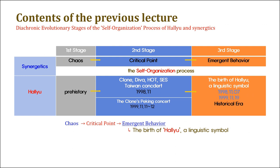Also, last time, we confirmed that the diachronic evolutionary steps of the self-organization process of Hallyu and synergetics are similar. We found the evolutionary processes leading to chaos, critical point, and emergent behavior were similar. These findings provide the basis for interpreting the Hallyu phenomenon from the perspective of synergetics.